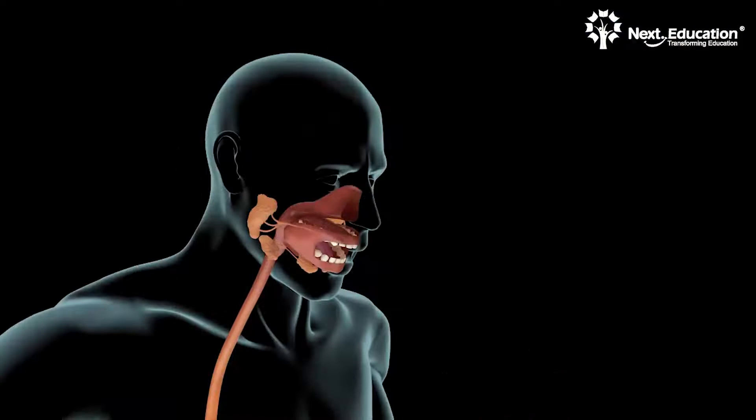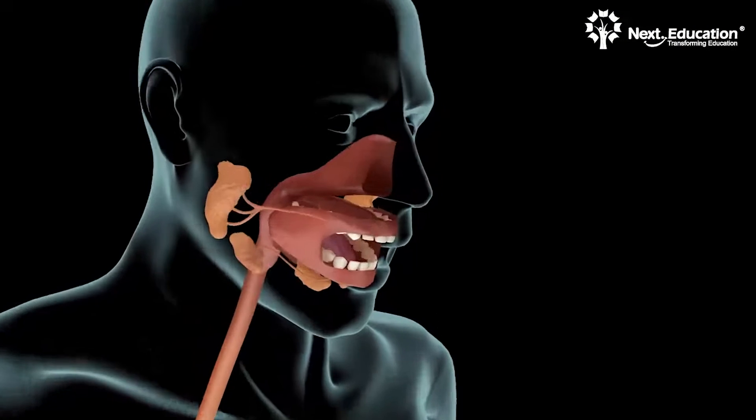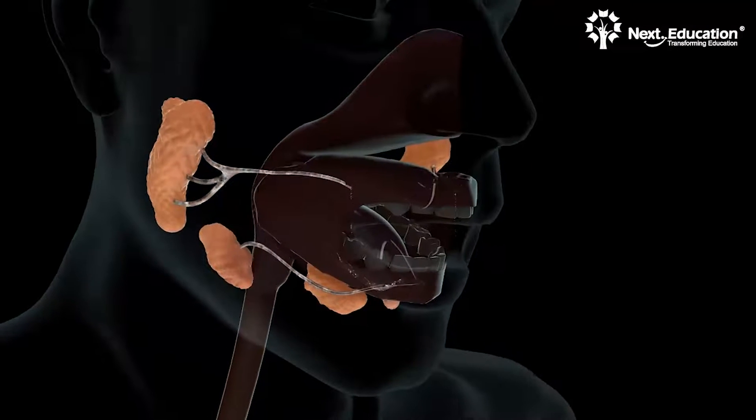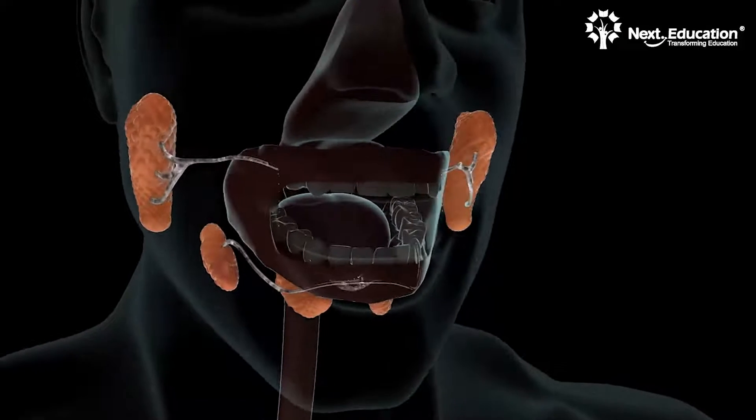It is amazing to note that the sight, smell, or taste of food enables the salivary glands to secrete saliva in the mouth and the stomach walls to secrete gastric juice.